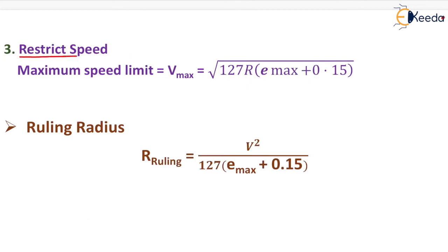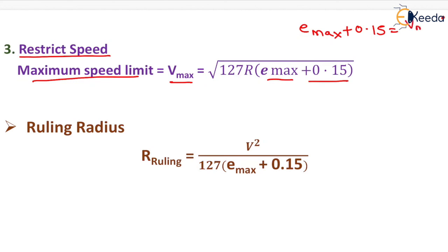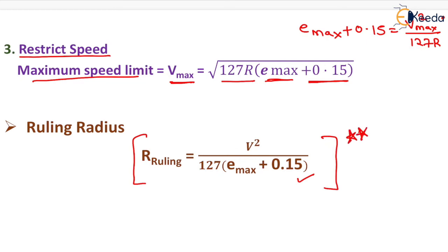Step 3 involves restricting the speed. The maximum allowable speed is V max = √(127R × (e max + 0.15)), derived from e max + 0.15 = V max² / 127R. If speed restriction is not desired, the ruling radius must be calculated as R = V² / (127 × (e max + 0.15)). This ruling radius formula is also very important from the GATE examination point of view.